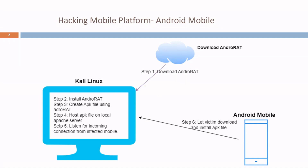For the easiness of demonstration I have created a small diagram. In this diagram I have three main components or three main parties. First of all I have Android RAT which has been hosted on GitHub. Then I have a Kali Linux, which is my attacking or hacker machine. Then I have an Android mobile which will be my victim machine.